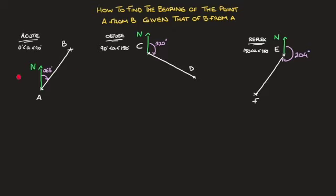In this first example, we need to find the bearing of point A from point B, and we can see that the bearing of B from A is 63 degrees — that's the angle measured clockwise from the northern line. Placing ourselves at point B, we draw the north line and label it N. The bearing of point A from point B is the angle going clockwise from north back to the line segment BA.